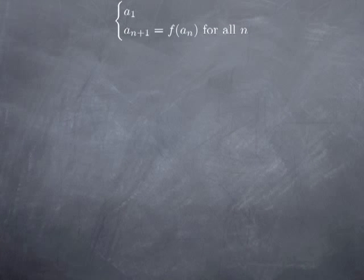Now let's look more generally at this situation, where we have a sequence defined by induction by the first term, and then a_{n+1} is f(a_n) for all n, where f is a continuous function. Then we know that if it is convergent, then the limit is a fixed point.